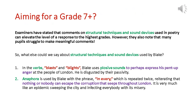For those aiming for higher grades, you may also want to talk about structure and sound in more detail. When Blake uses verbs like 'blasts' and 'blights', that BL sound is a plosive sound because it explodes from the mouth — perhaps used to express the pent-up anger and aggression Blake has at the people of London for not fighting back. He also uses anaphora, repeating the phrase 'in every' at the beginning of clauses, suggesting that the corruption in London spreads into every corner and cannot be avoided.